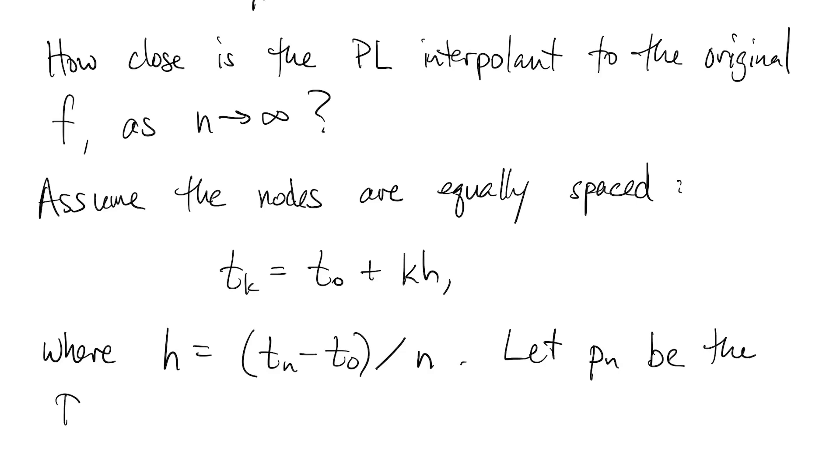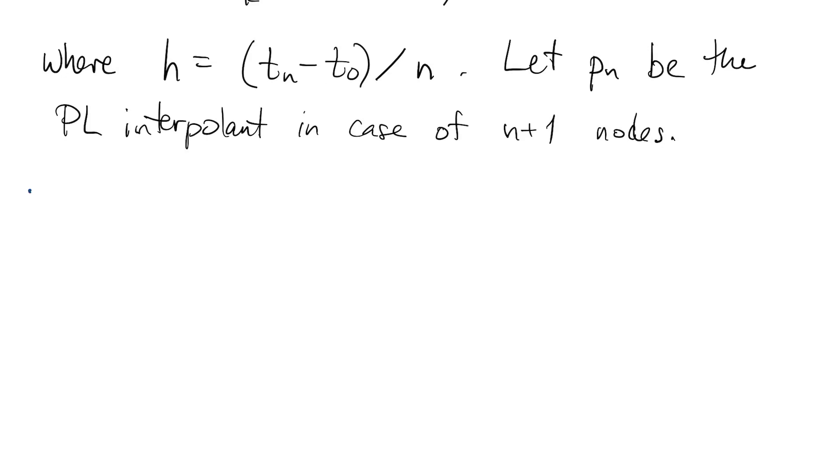Let's let pn be the interpolant we get when we use n plus 1 nodes. As described in the exercises, there's a theorem we can prove giving an upper bound on the difference between f and pn. This bound is a constant m times h squared, where m is the maximum of the second derivative of f.